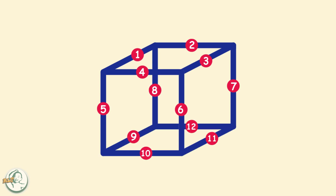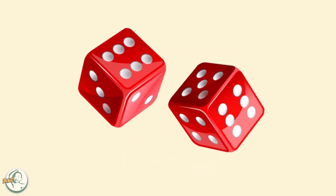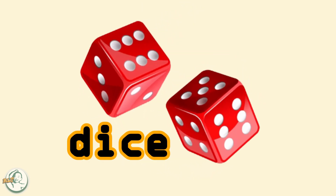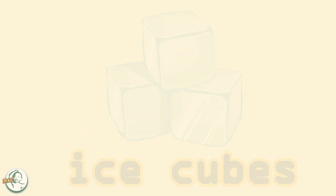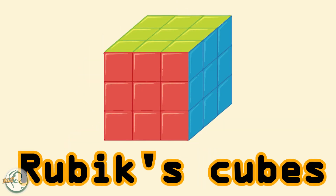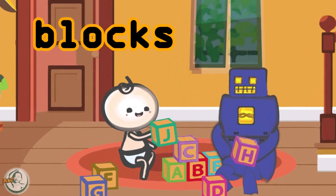It's a simple shape that we see everywhere in our daily lives, like in dice, ice cubes, Rubik's cubes, and even the blocks we played with as kids.